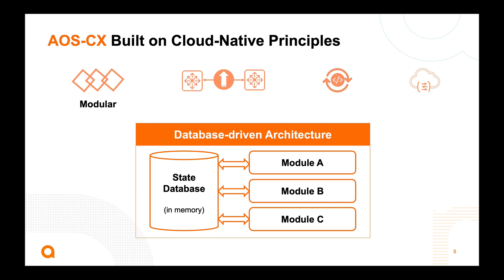All software systems are modular, in the sense that different functions are programmed as single sequences of code and then put together to form the overall software. However, the question is how autonomous are these modules? How do changes or failures in one affect the others? The answer is determined by how these modules communicate with each other to exchange information. For example, how do the modules implementing different routing protocols collaborate to create a single routing table?